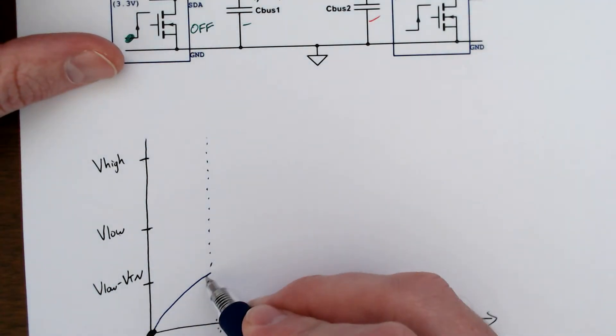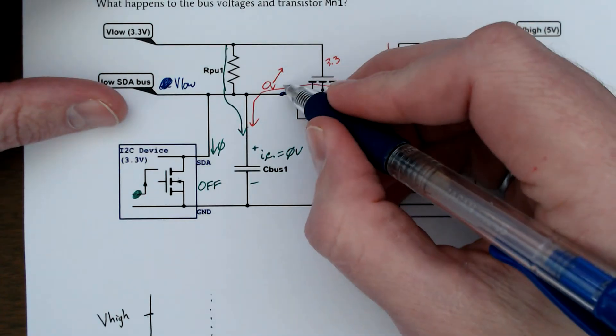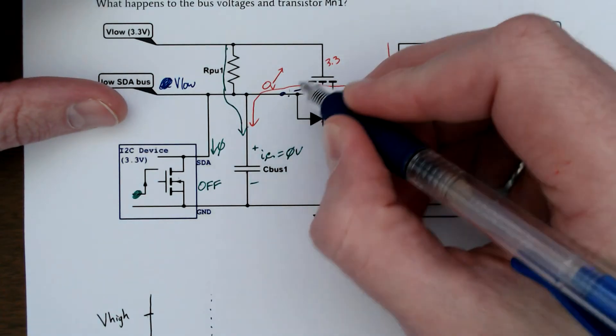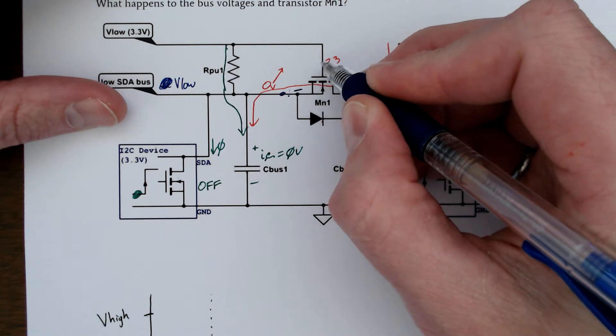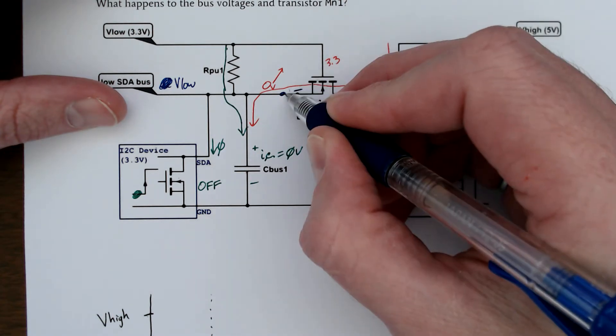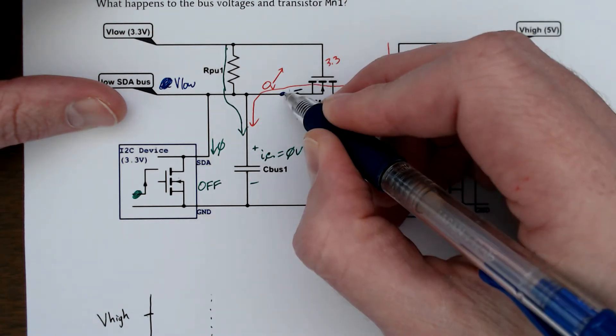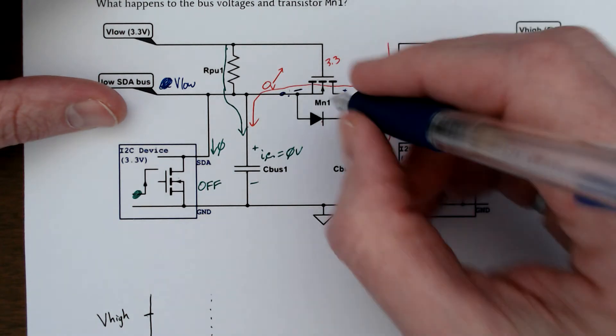V low minus the threshold. When our output node hits V low minus the threshold, so 3.3 minus the threshold, this MOSFET turns off.